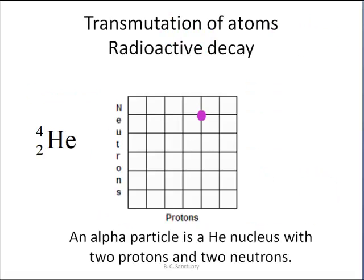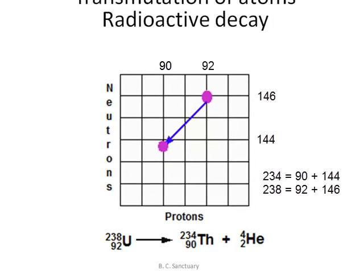So uranium 238 decays by alpha decay as the alpha particle is emitted. We can indicate that by a change in the point of the graph, because uranium 238 has lost two protons and two neutrons, so the lower spot corresponds to thorium.